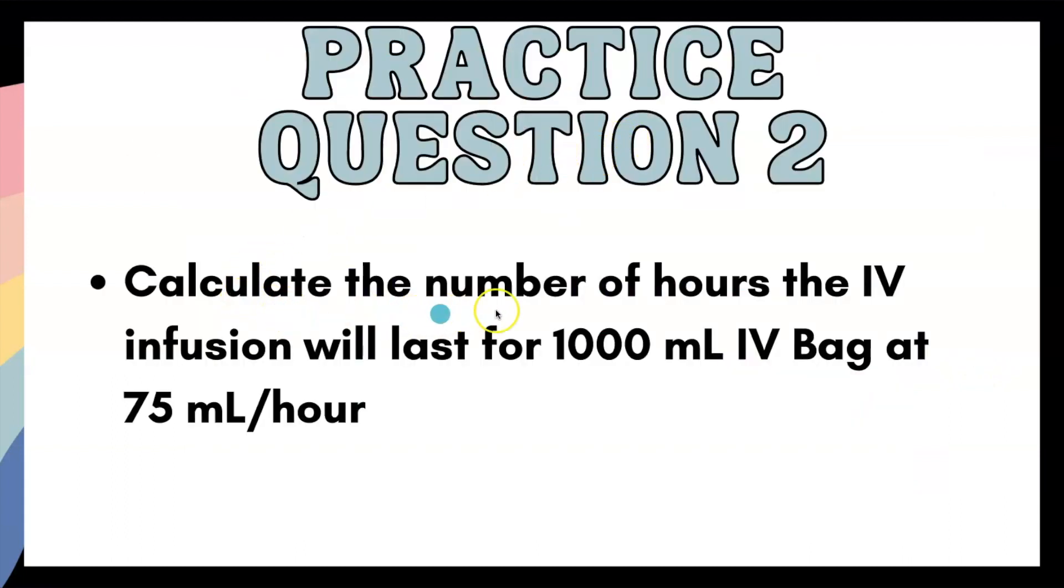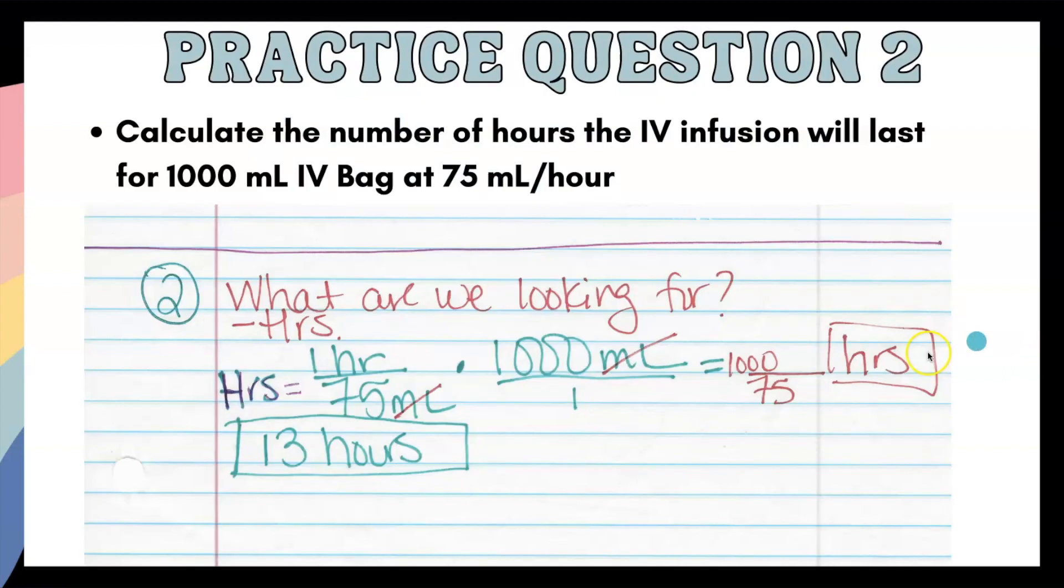Practice question two. Calculate the number of hours the IV infusion will last for a 1,000 ml IV bag at 75 mls per hour. What are we looking for? Hours. We have the married fraction here. One hour is going at 75 times. We have a 1,000 ml bag. 1,000 divided by 75 is 13 hours.